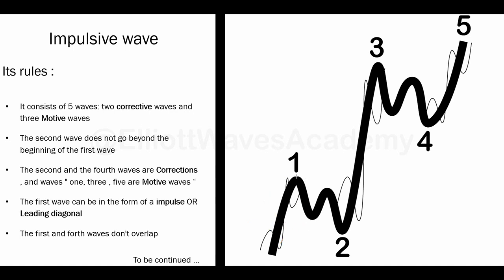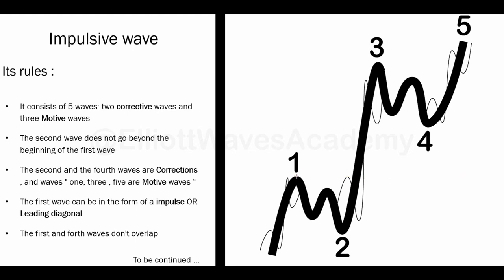The fifth rule, which is pretty common, says that Wave 1 and Wave 4 don't overlap. This means Wave 4 cannot push the price into the price range of Wave 1.